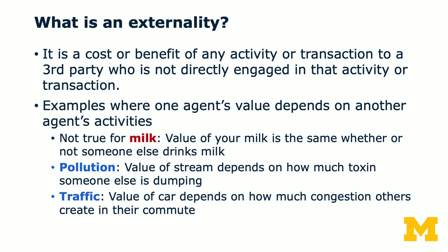So what is an externality? It is either a cost or benefit of any activity or transaction to a third party who's not directly involved or engaged in that activity or transaction. Here are some examples where one agent's value depends on another agent's activity. Let's first consider the situation about milk. The value of your milk is the same whether or not someone else drinks milk, so we say that milk is a private good and it does not impose externalities on other people's consumption.